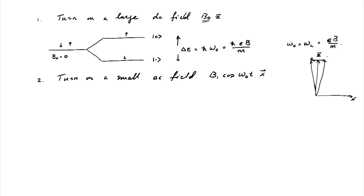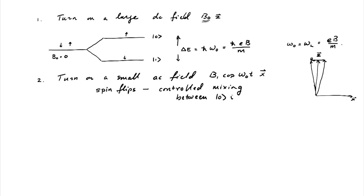So what's the effect of this AC field? It induces spin flips. It induces a controlled mixing between the 0 and 1 states — between the spin up and spin down states.